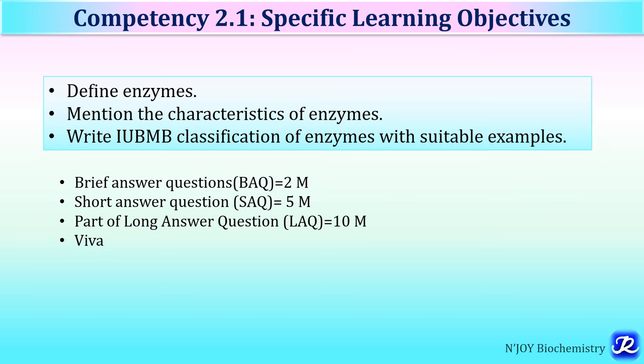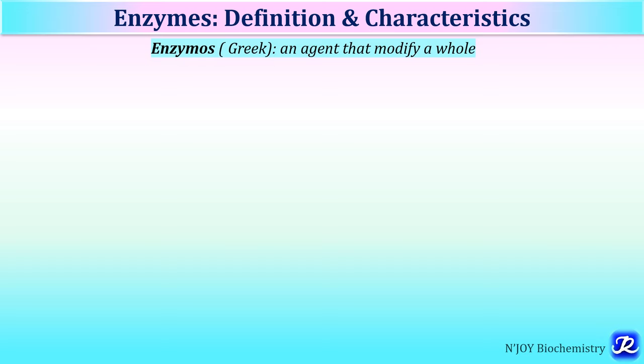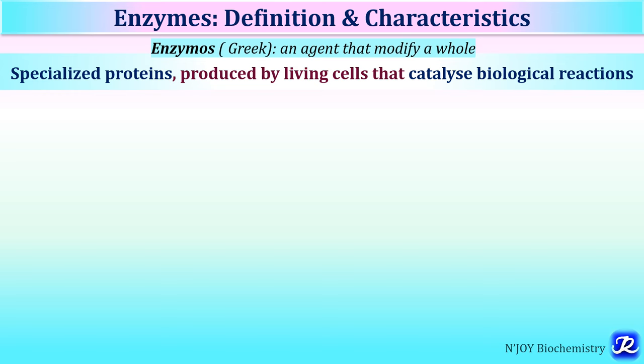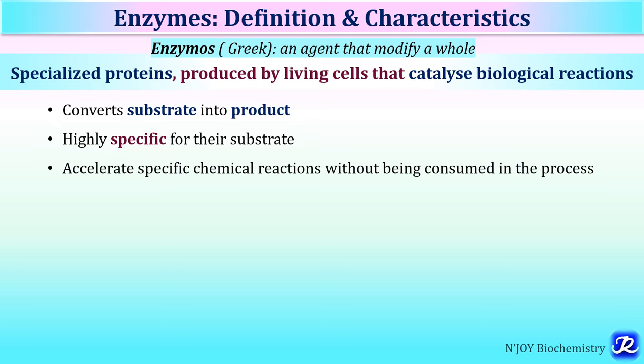The word enzyme is derived from a Greek word 'Enzymos' which means an agent that modifies a whole. Enzymes are specialized proteins produced by living cells that catalyze biological reactions. Enzymes convert substrate into product, are highly specific for their substrate, and accelerate specific chemical reactions without being consumed in the process.